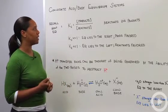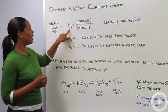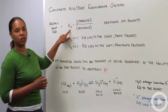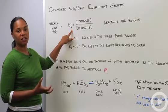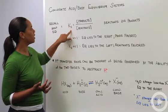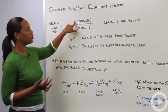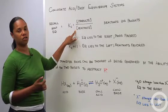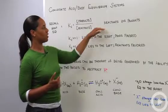Remember that K sub c is the equilibrium expression, c meaning that it's based on concentrations as opposed to partial pressures. So K sub c, the equilibrium expression, is equal to the concentration of products over the concentration of reactants for the most basic reaction where we just have reactants in equilibrium with products.